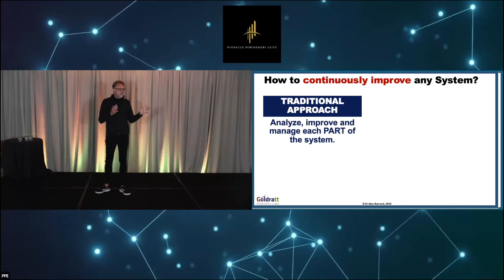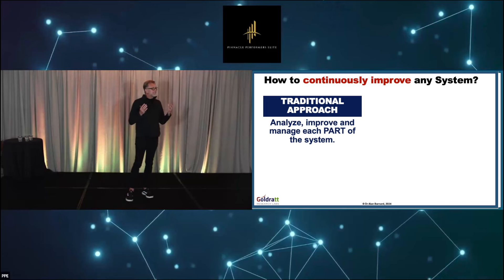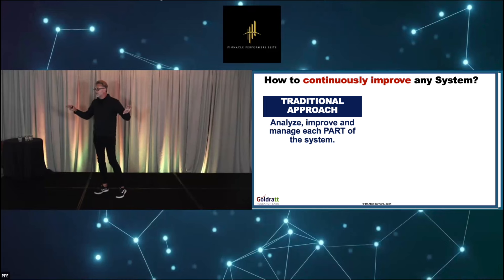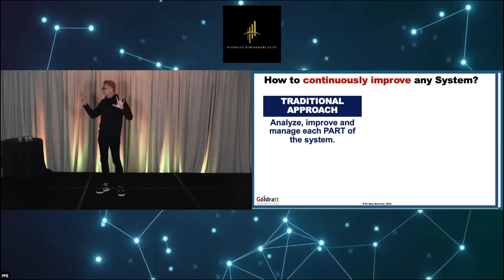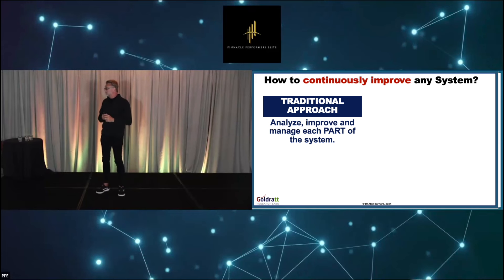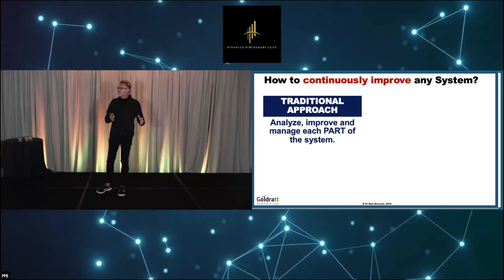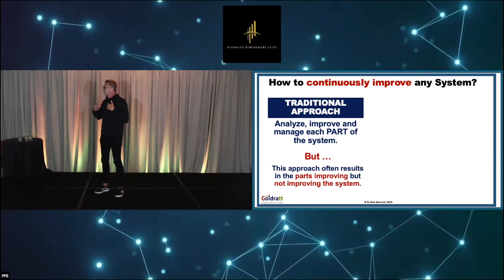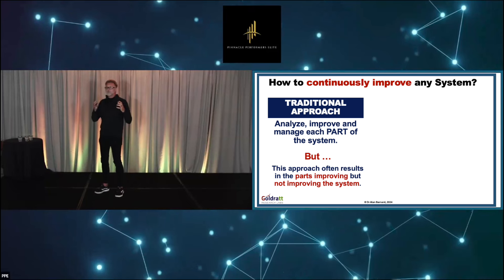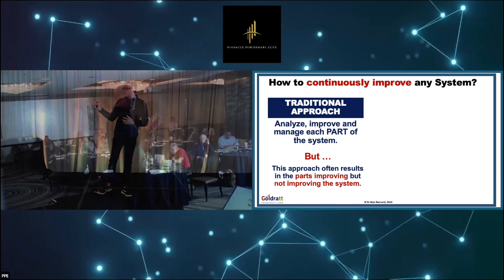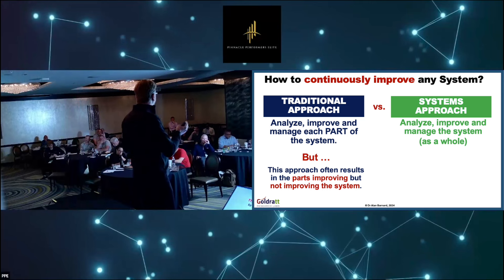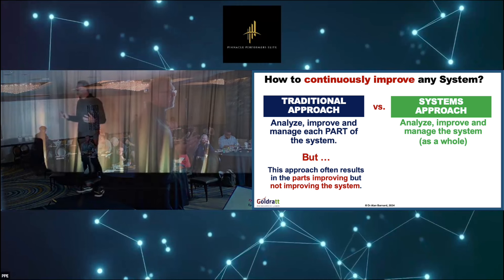So we go back to the objective: we're trying to continuously improve a system. How do you go about doing that? There are two very different approaches. One approach — the traditional approach — says if you want to improve the system, you have to improve each part of the system, analyze, improve, and manage each part. The problem with that approach is it doesn't result in the system improving; it results in the parts improving. The sum of all local improvements doesn't give you a system improvement. So you need to follow a systems approach — analyze, improve, and manage the system.